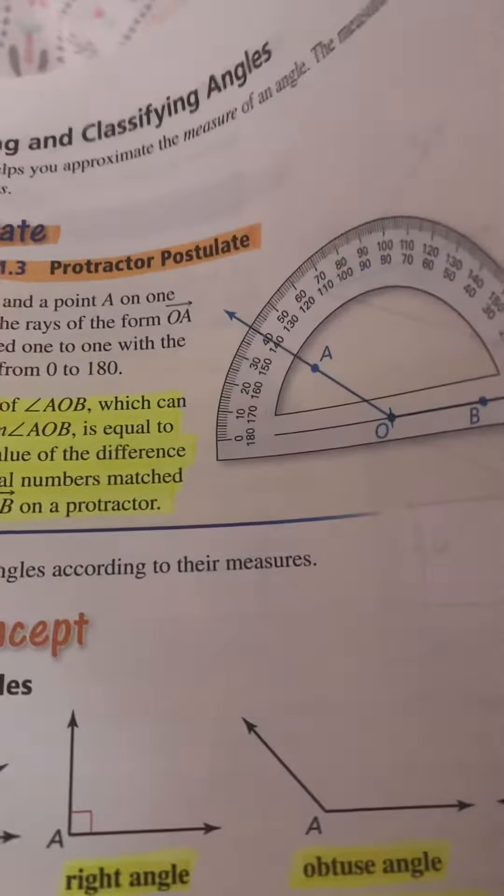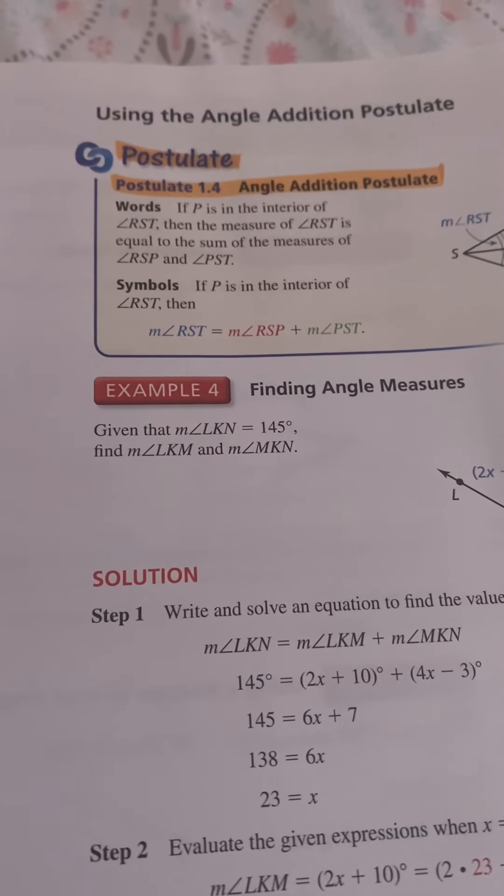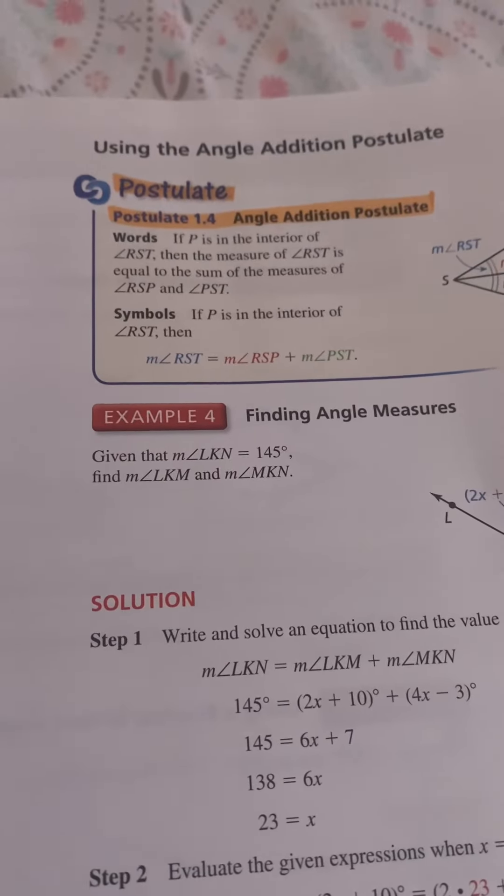Reading: In diagrams, matching arcs indicate congruent angles. When there is more than one pair of congruent angles, use multiple arcs.